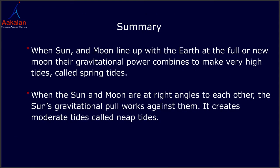To summarize: when the Sun and Moon line up with the Earth at the full or new Moon, their gravitational power combines to make very high tides called spring tides. When the Sun and Moon are at right angles to each other, the Sun's gravitational pull works against the Moon's, creating moderate tides called neap tides.